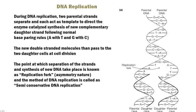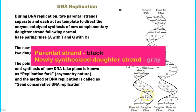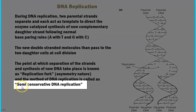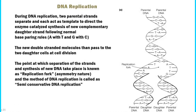The new double-stranded molecule then passes on to the two daughter cells during cell division. On the right-hand side, you can see two double-stranded molecules — one is the conserved parental strand and the other is the newly formed daughter strand. This is the reason why replication is referred to as the semi-conservative model. After the formation of two double-stranded molecules, the DNA is passed on to the two daughter cells formed at the end of cell division.